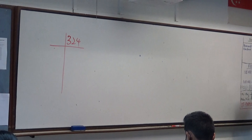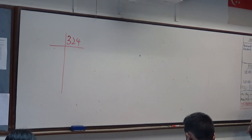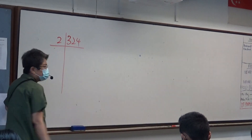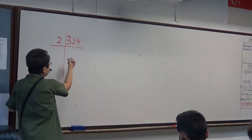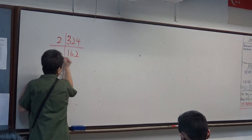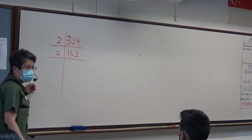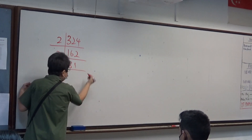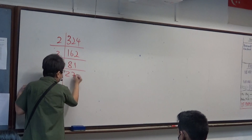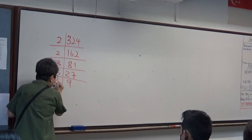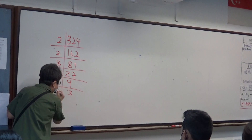I always start with the smallest prime number, and what is the smallest prime number? Two. What's next? 162. Why? 162 divided by 2. Then 81. 81 divided by 3 gives 27. 27 divided by 3 gives 9. 9 divided by 3 gives 3. 3 divided by 3 gives 1.